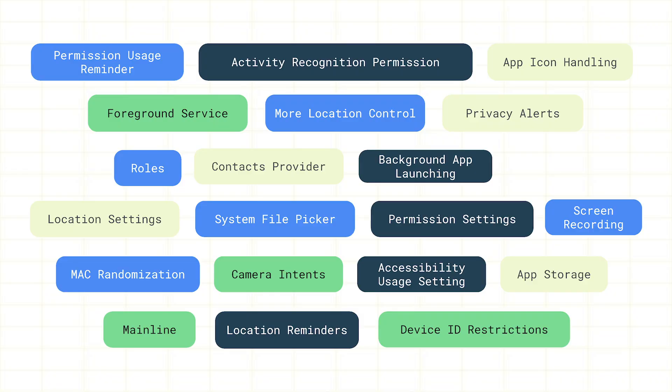In Android 10, we introduced numerous features to help protect our users' privacy, and we've received tons of excellent feedback from users and app developers since then. One of our main focuses in Android 11 has been to build upon the successes of Android 10 based on that feedback. The features I'm going to talk about today aim to provide users more control over how their data is used and to make that usage more transparent to them.